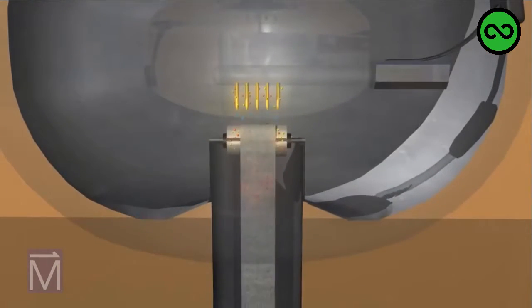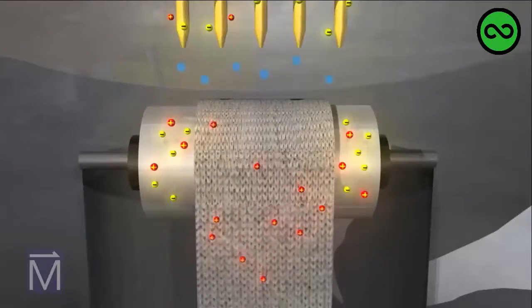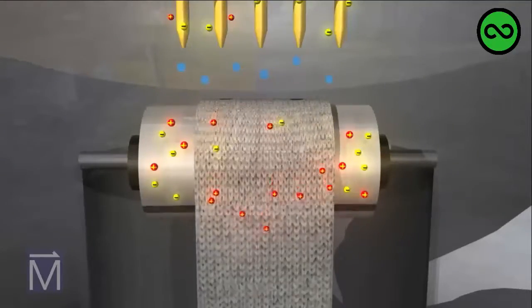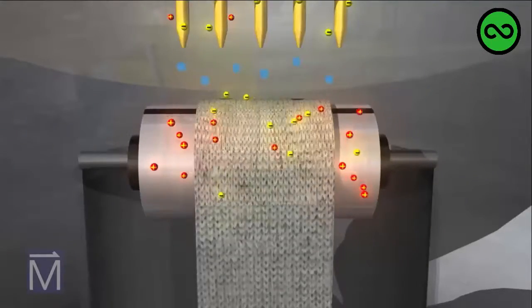The top roller is made of aluminum, which tends to lose electrons. As the positively charged belt rubs against it, electrons move from the aluminum to the belt, giving the roller a positive charge.